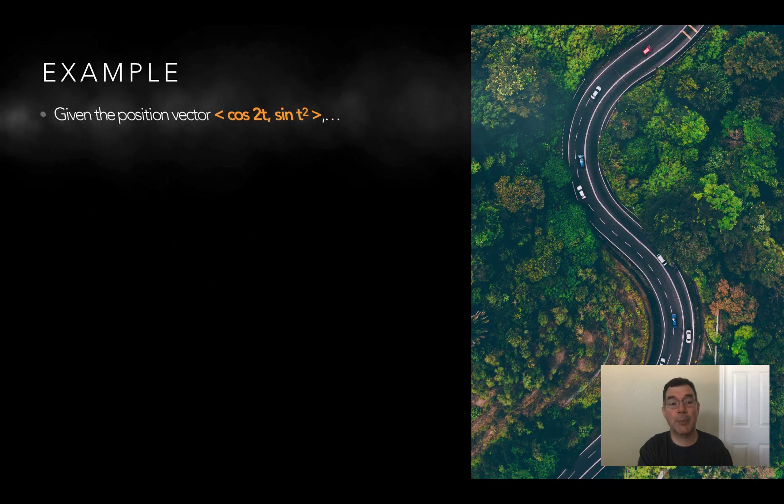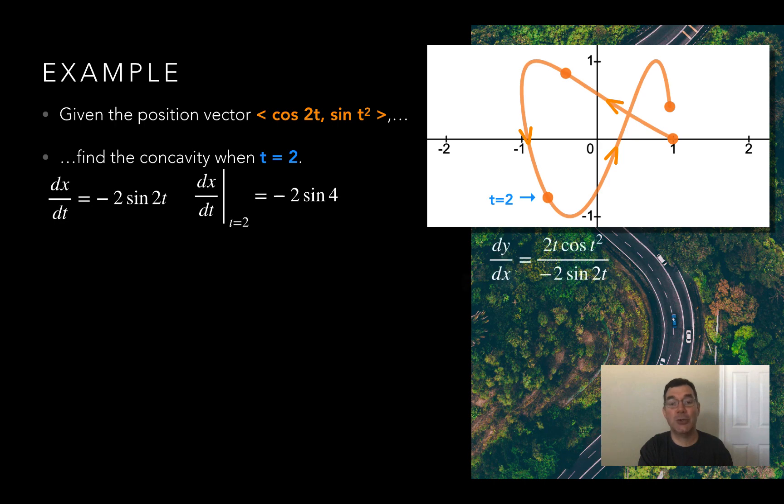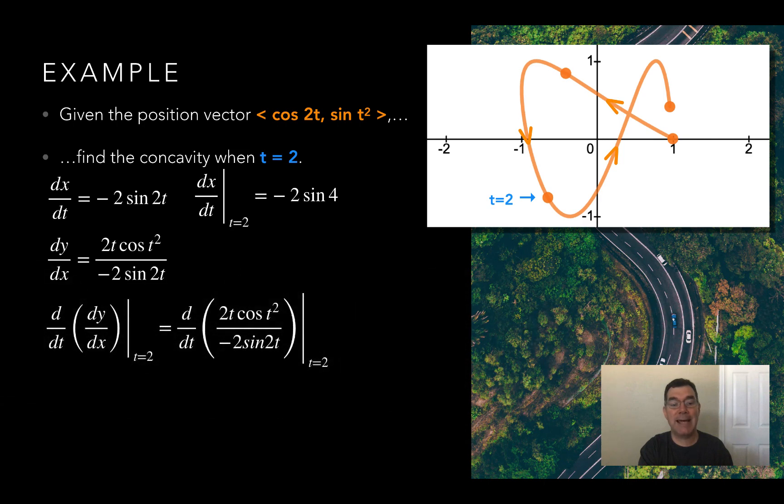So here's an example. Let's go back to this example right here, and I'm going to find the concavity when t equals 2. Well, I figured out dx dt was negative 2 sine 2t. And at t equals 2, that was negative 2 times the sine of 4. dy dx was dy dt over dx dt, which I've already figured out to be that fraction there. And at t equals 2, it's going to be d dt of that when t equals 2.